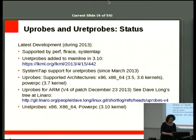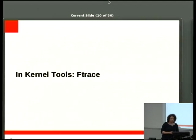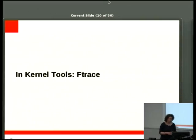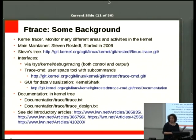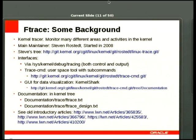Now let's look at the actual tools that provide an abstraction layer on these fundamental concepts. Starting with ftrace — the first one to be in the kernel, started in 2008, maintained mostly by Steve Rostedt. There are various trees where you can find various pieces of it. There are three different ways the user can talk to ftrace.